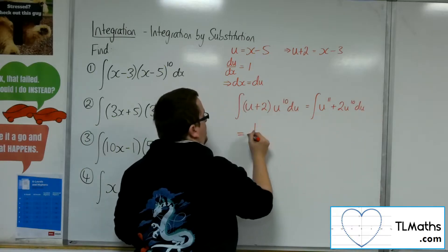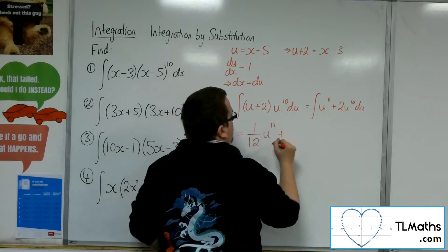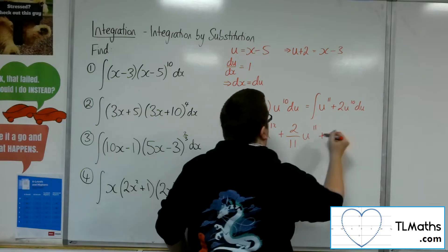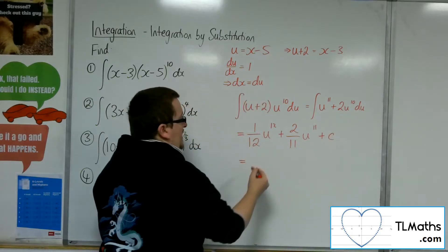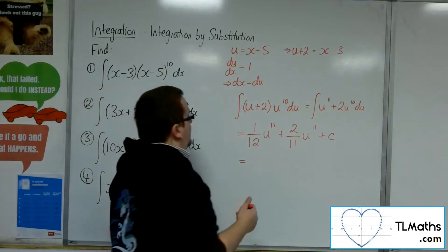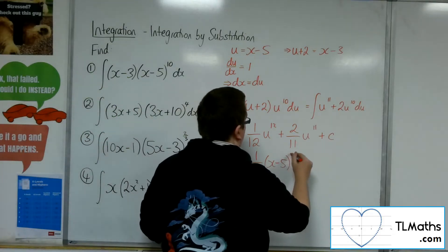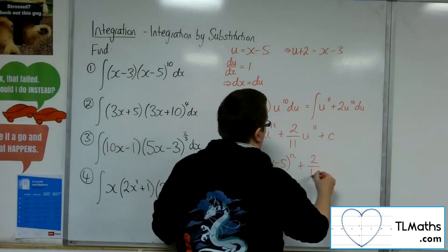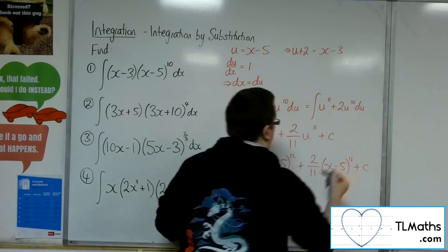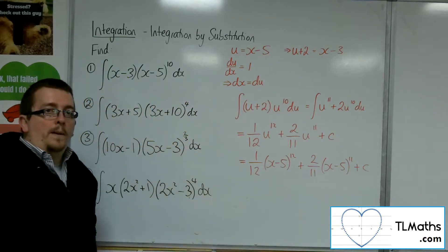Add 1 to the power, divide by the new power. So one twelfth u to the 12 plus two elevenths u to the 11 plus c. We now want to put the u back in, so that's x minus 5. So one twelfth x minus 5 to the 12 plus two elevenths x minus 5 to the 11 plus c. That is the answer to number 1.